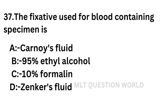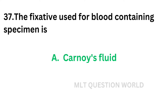Question number 37: The fixative used for blood-containing specimen is — option A: Carnoy's fluid, option B: 95% ethyl alcohol, option C: 10% formalin, option D: Zenker's fluid. Which of the following can be used for blood-containing specimen? The correct answer is option A, Carnoy's fluid. Carnoy's fluid is the fixative used for blood-containing specimen.